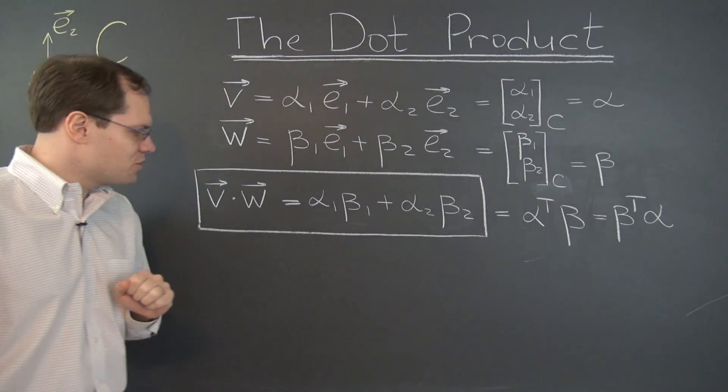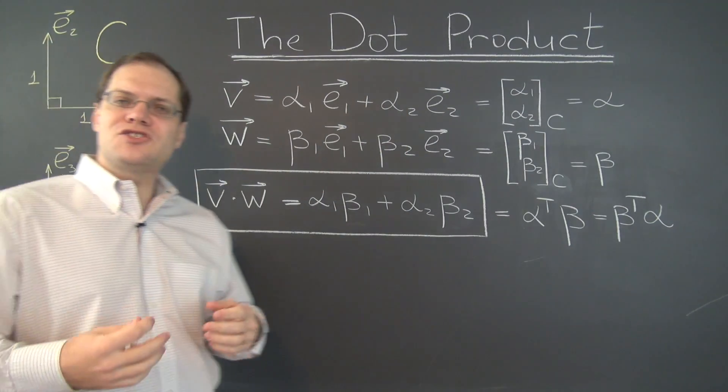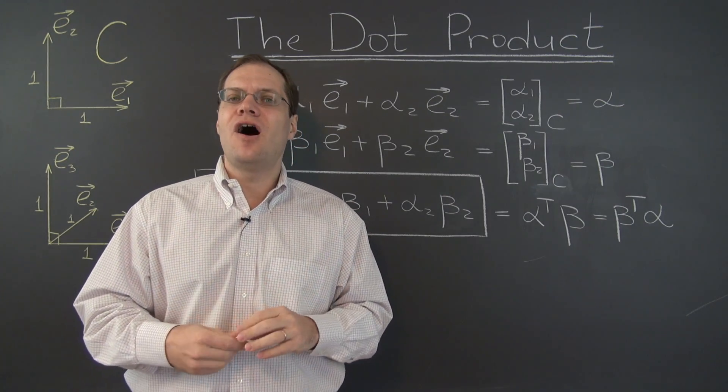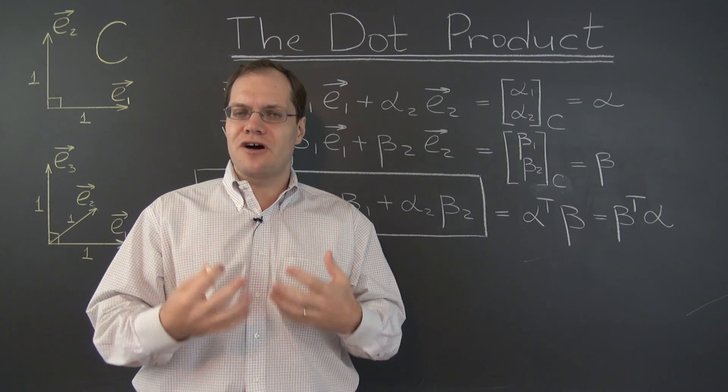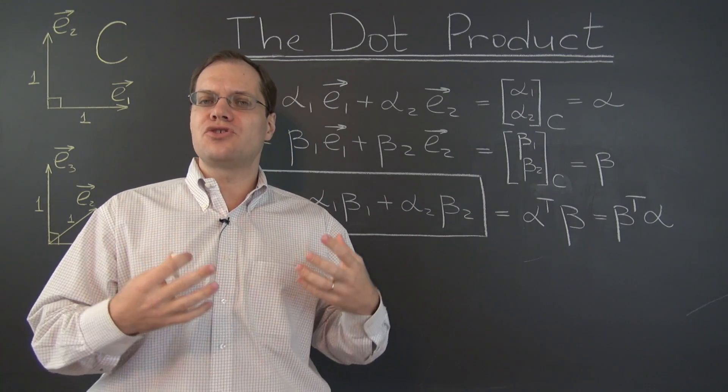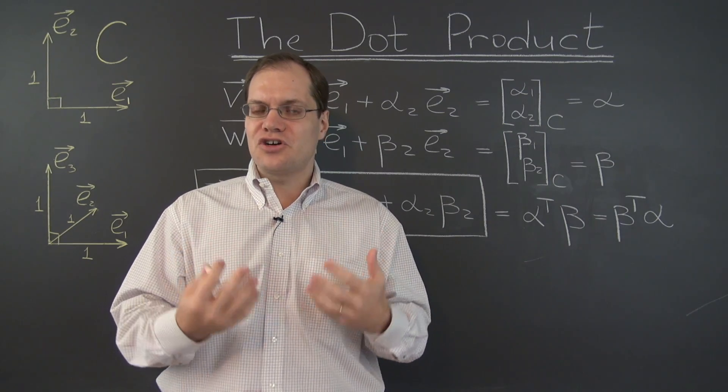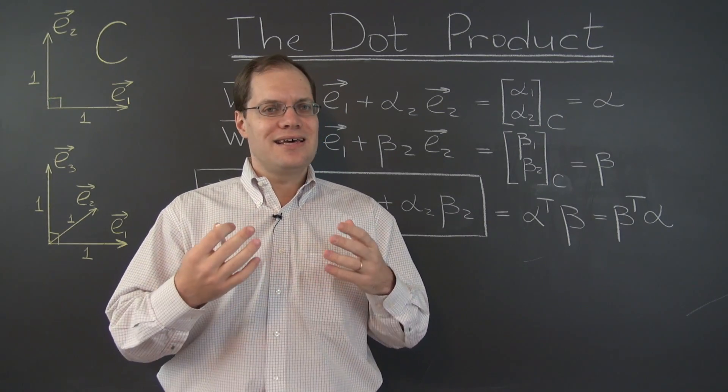Let's talk a little bit more about geometry. Let's talk about angles. So one thing I should have mentioned before is that the dot product offers a perfect test for orthogonality. If two vectors are orthogonal, then their dot product is zero, because the cosine of 90 degrees is zero.